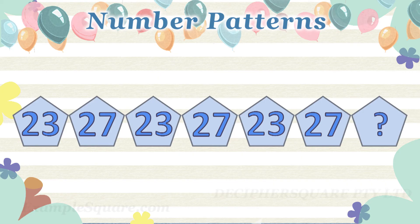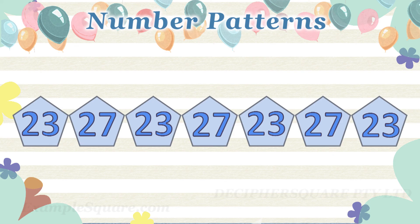In this pattern, numbers simply alternate between 23 and 27. First number is 23, and then 27, and then again 23 followed by 27. And the numbers continue to alternate. So the next number should be 23.